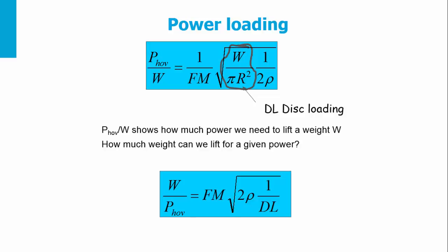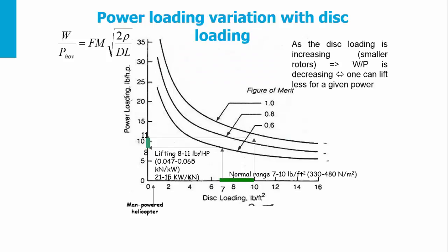How much weight can we lift for a given power? Or conversely, the weight divided by the power to hover. This depends on the figure of merit and disk loading. Representing the power loading variation with disk loading, one can see the different trends of a helicopter.